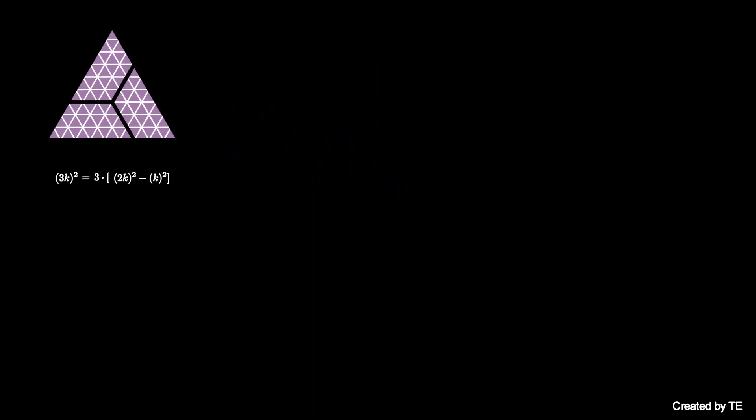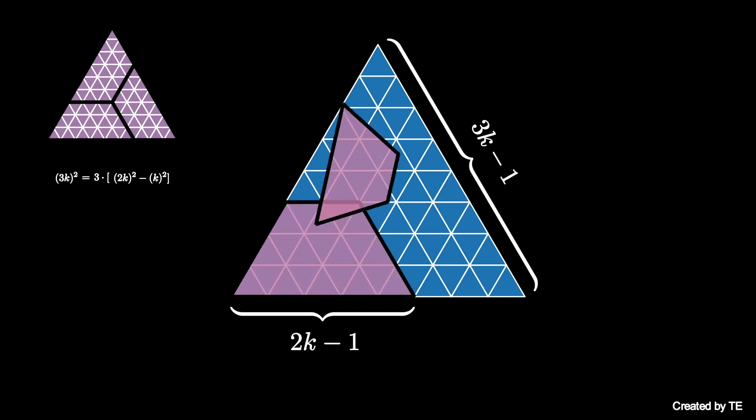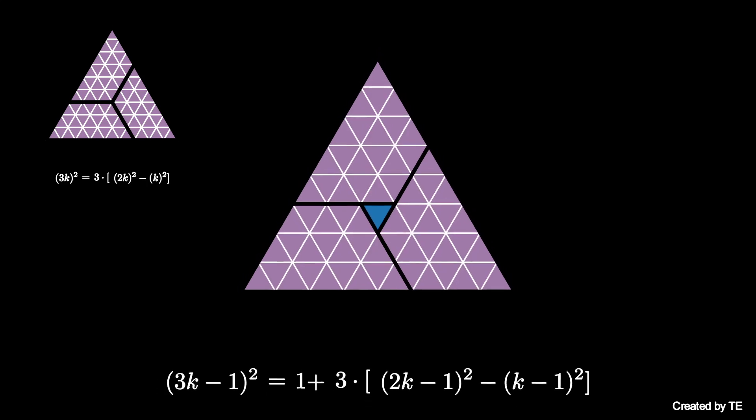Next, start with a square of a number that is 1 less than a multiple of 3, say 3k minus 1. Again, we consider the trapezoid tile in the lower left, this time with bases 2k minus 1 and k minus 1. Using three copies of this tile this time covers all but one of the small triangles in the tiling. Therefore, the quantity (3k - 1)² is equal to 1 plus 3 times the quantity (2k - 1)² minus (k - 1)², as the trapezoid is again the difference of two squares.